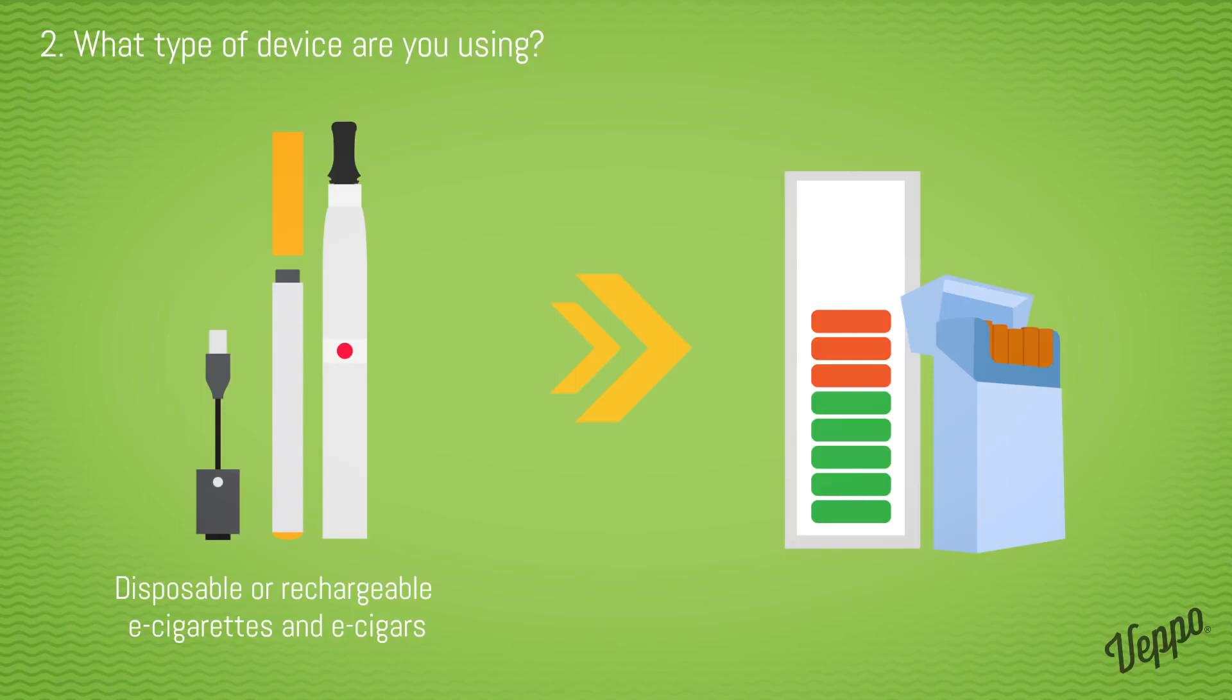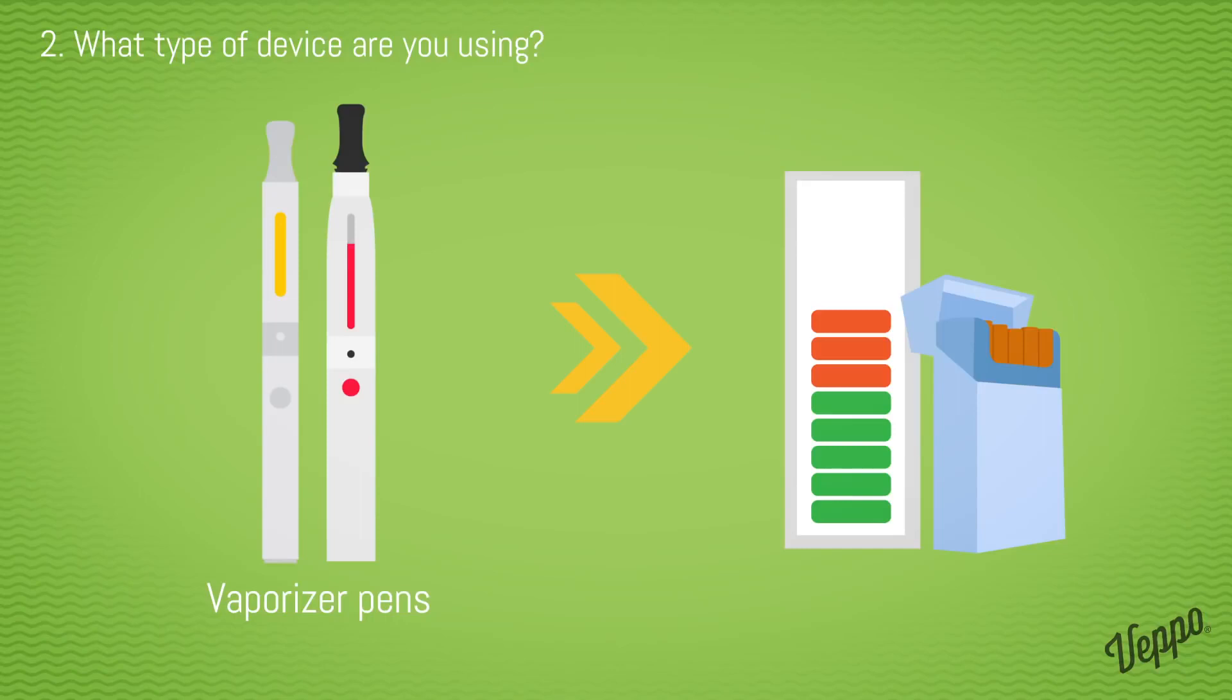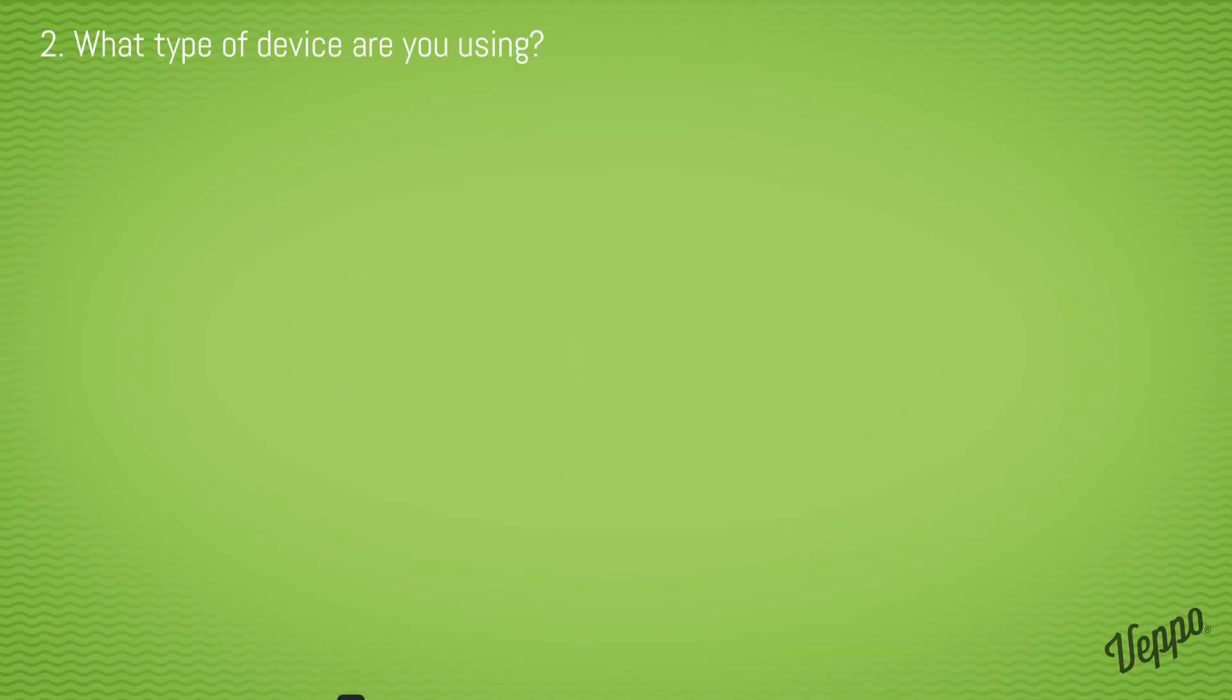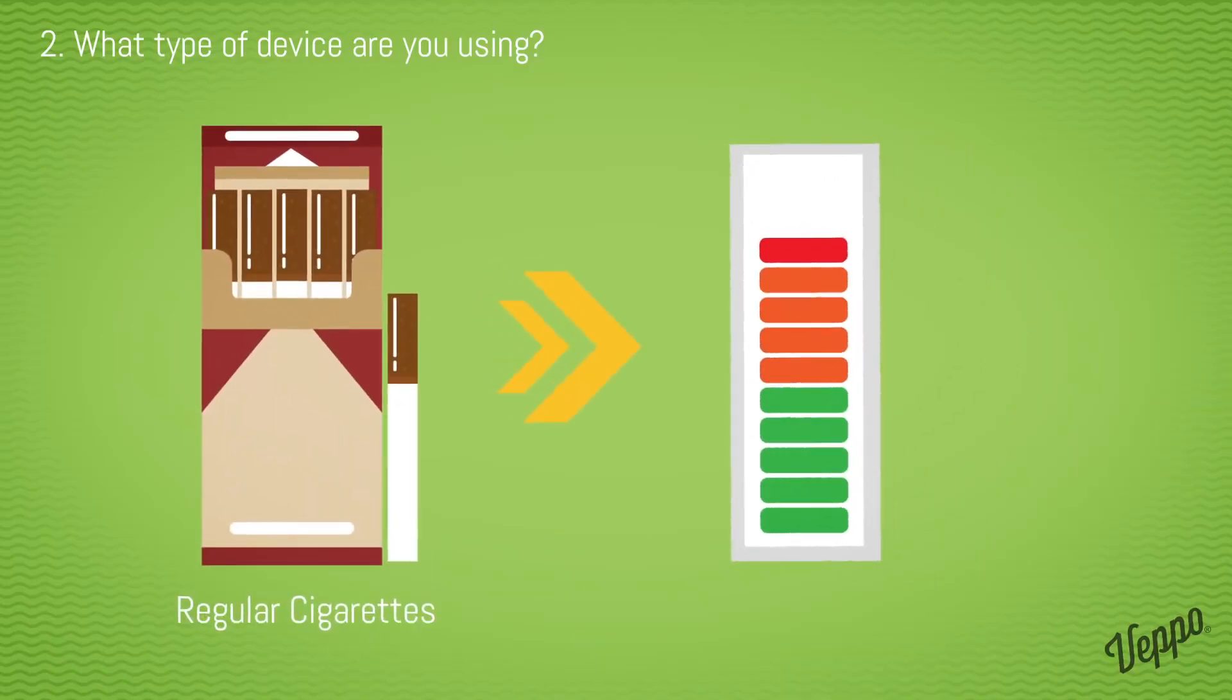For more powerful devices like those that are 10 to 20 watts such as vaporizer pens, you can typically drop down one level from your nicotine level consumed from tobacco. For example, if you smoke regular cigarettes, you can drop the nicotine level down to medium.